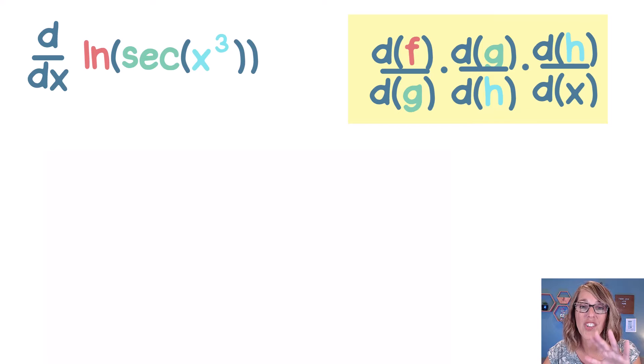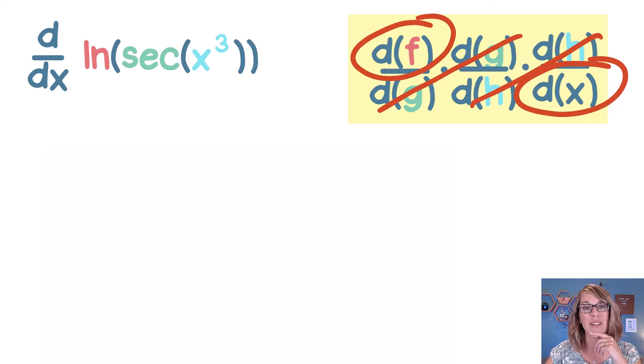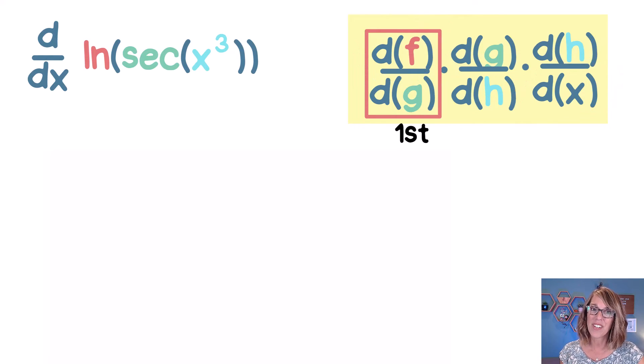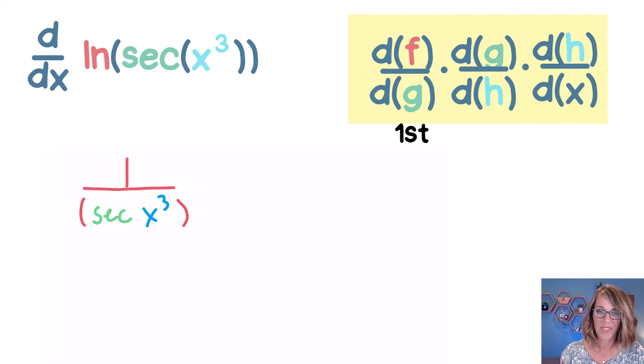But again, Leibniz notation works really nicely here. As I cancel the dgs and the dhs, I've got exactly what I'm looking for. Let's go ahead and take the derivative of that outer natural log function first. Well that derivative is going to be 1 over whatever the next function is. So g is the secant and it's really the secant of x cubed. So I'm going to go ahead and write inside here the secant of x cubed. So that takes care of my outermost function.